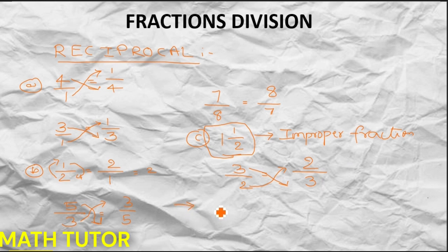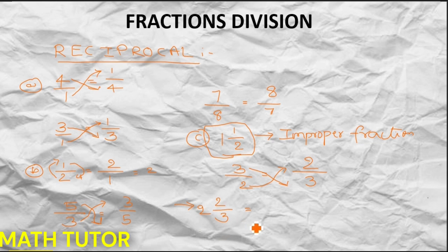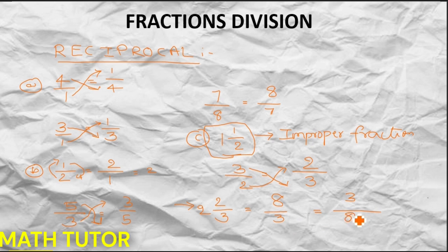Now tell me: 2 and 2 by 3 — what is the reciprocal? First you have to convert this mixed fraction to an improper fraction: 3 times 2 is 6, plus 2 is 8, so it becomes 8 by 3. Now the reciprocal will be 3 by 8.